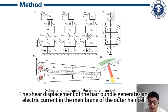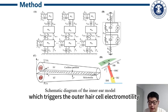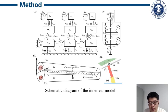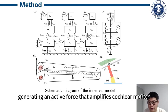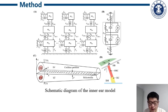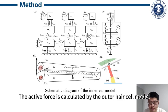The shear displacement of the hair bundle generates the receptor current in the membrane of the outer hair cell, which triggers the outer hair cell to generate the active force that amplifies the cochlear motion. The active force is calculated by the outer hair cell model.